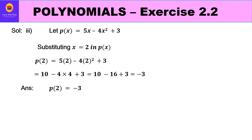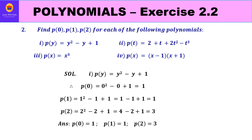For the third part, substitute x=2 in 5x - 4x² + 3: p(2) = 5(2) - 4(2)² + 3 = 10 - 4(4) + 3 = 10 - 16 + 3 = -3. So the value of this polynomial at x=2 is -3.